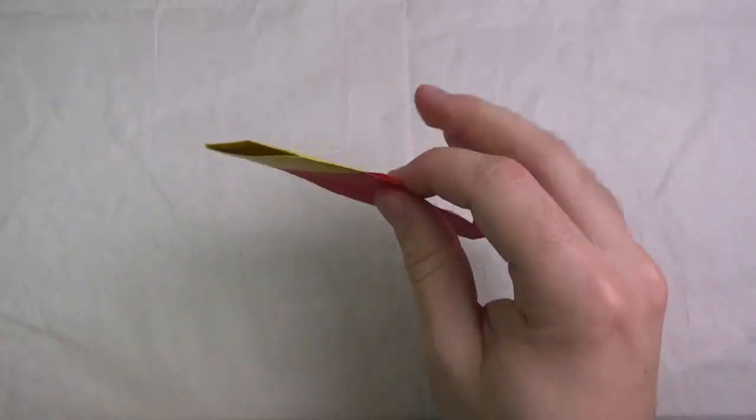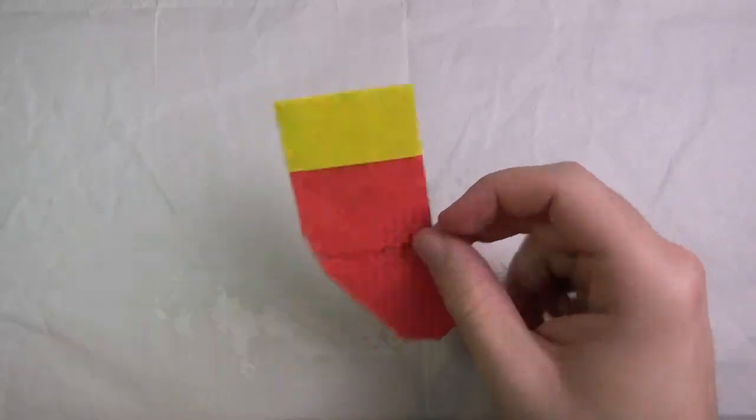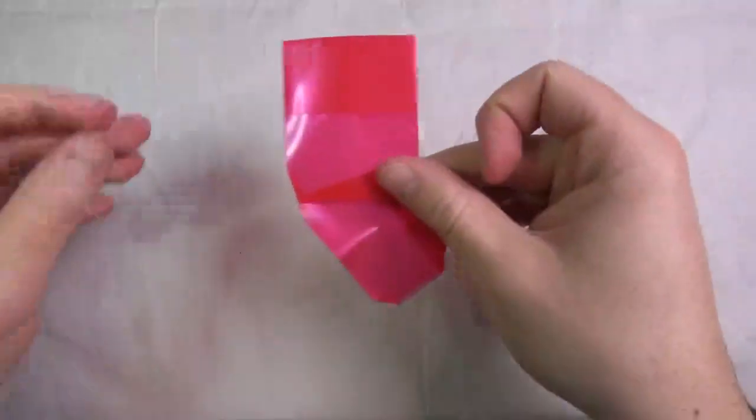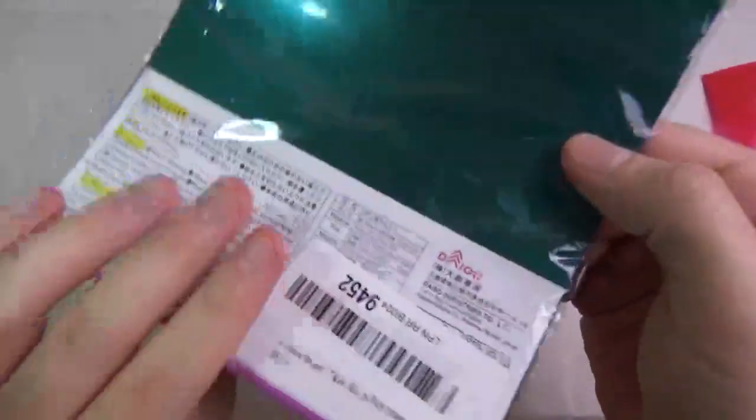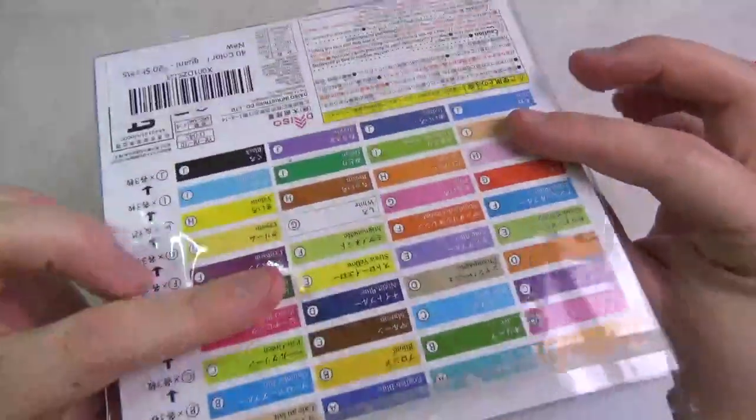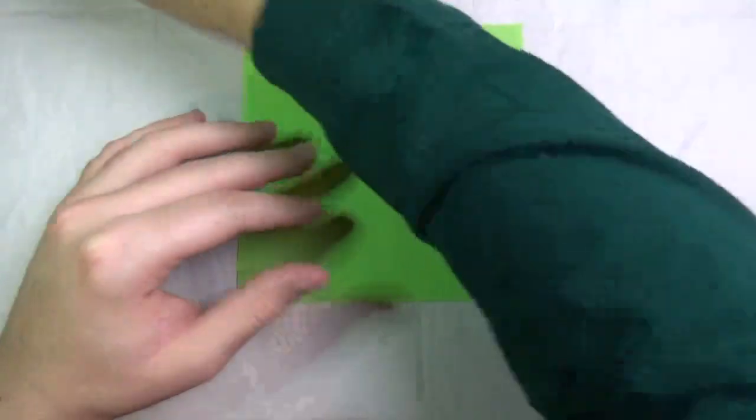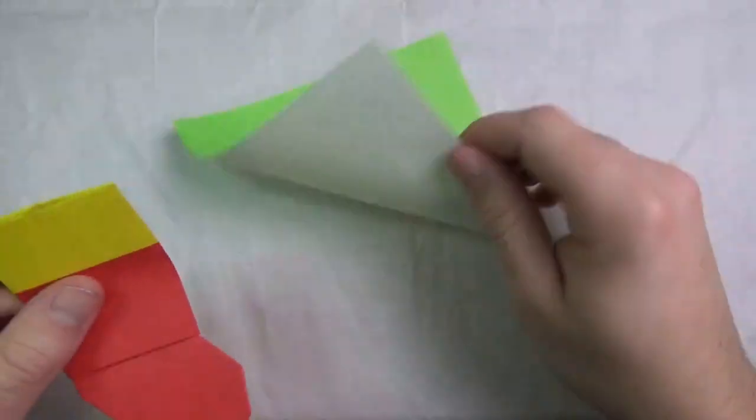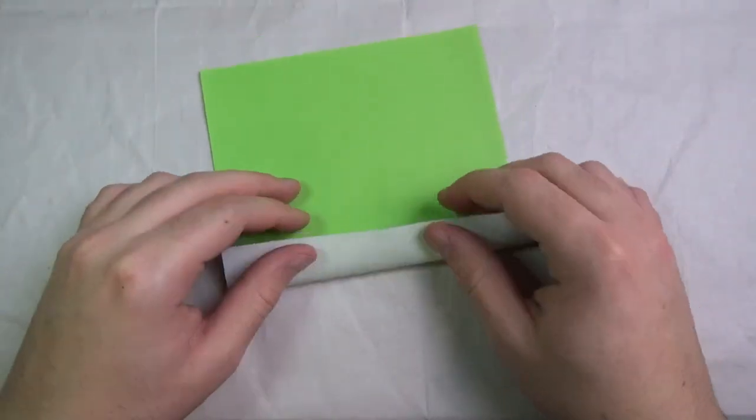Alright, so this stocking I used a 6 inch square of double sided origami paper that's red on one side and yellow on the other. And this stocking I used a 6 inch square of transparent origami paper. But for this tutorial I'm just going to use an ordinary 6 inch square of kami. So let's begin. I'm going to make a green stocking with a white trim on it. So let's begin stocking side up and fold this up.